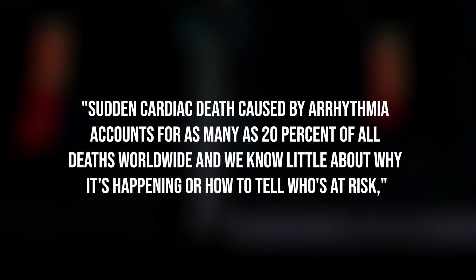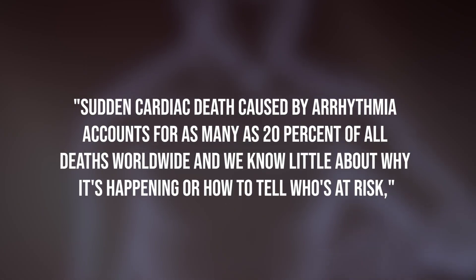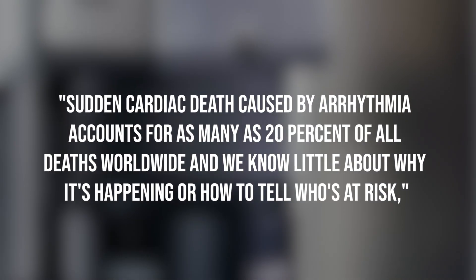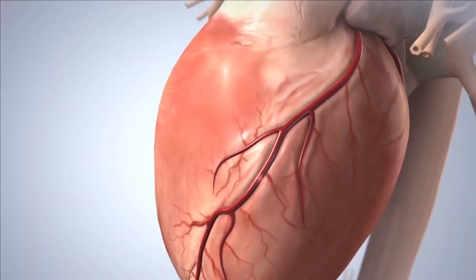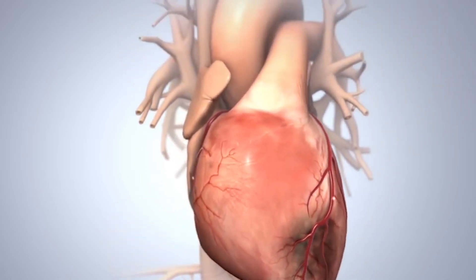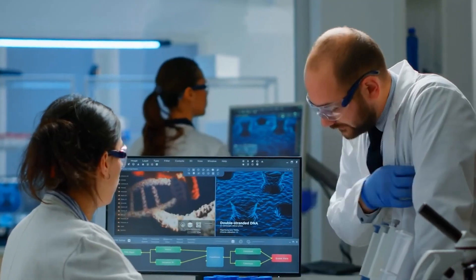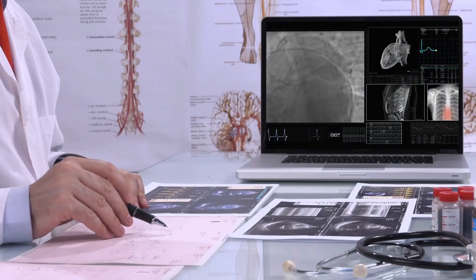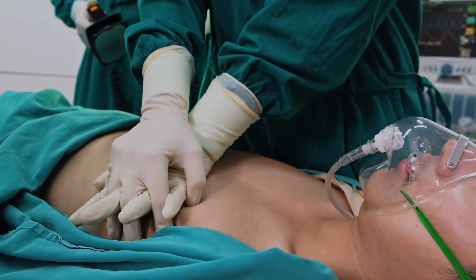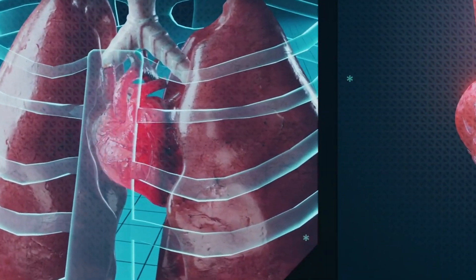"Sudden cardiac death caused by arrhythmia accounts for as many as 20 percent of all deaths worldwide, and we know little about why it's happening or how to tell who is at risk," said senior author Natalia Trayanova, the Murray B. Sachs Professor of Biomedical Engineering and Medicine. "There are patients who may be at low risk of sudden cardiac death getting defibrillators that they might not need, and then there are high-risk patients that aren't getting the treatment they need and could die in the prime of their life. What our algorithm can do is determine who is at risk for cardiac death and when it will occur, allowing doctors to decide exactly what needs to be done."